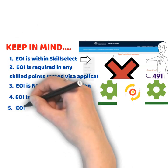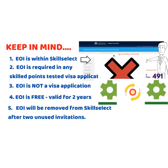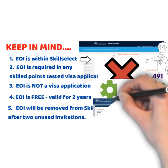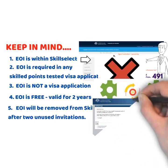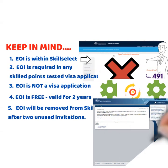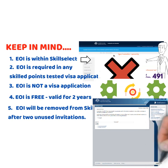The fifth point: your EOI will be removed from SkillSelect if you receive two invitations and don't lodge a visa application. After that, even if you lodge a new EOI, it is unlikely that you would get another invitation. Also, your EOI will be removed from SkillSelect if you have lodged for a different type of visa and that application was already granted.